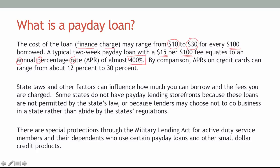By comparison, the APR on credit cards — a Visa or Discover card — ranges from about 12% to 30%. A payday loan is convenient and you can get money for emergencies right now, but they charge a lot for that convenience. In fact, they charge so much that state laws can influence how much you can borrow and the fees you are charged. Some states do not have payday lending storefronts because these loans are not permitted. Generally, people who don't have very much money take out payday loans, so it can be an exploitation of those in a difficult situation.